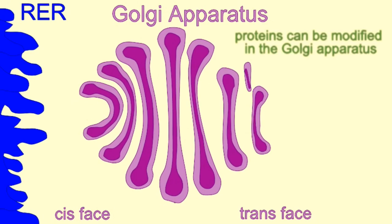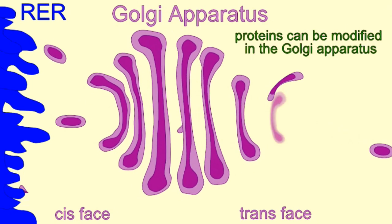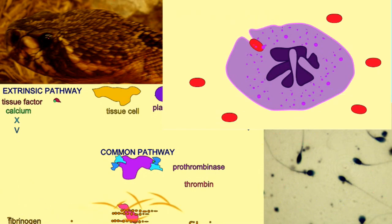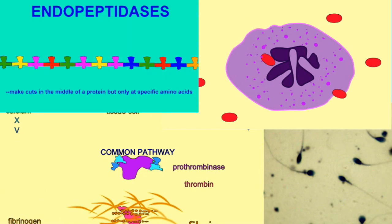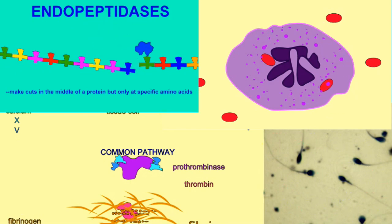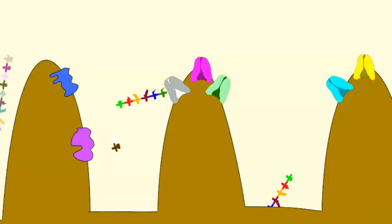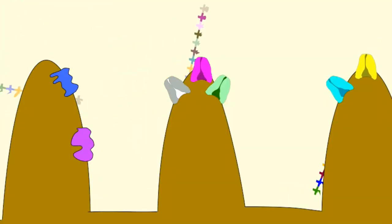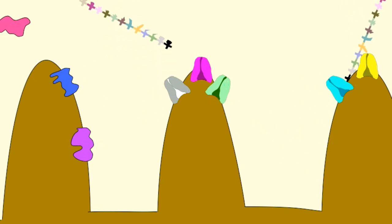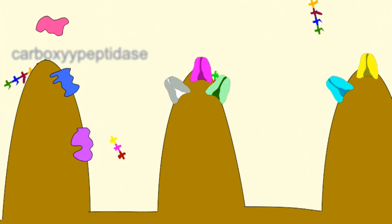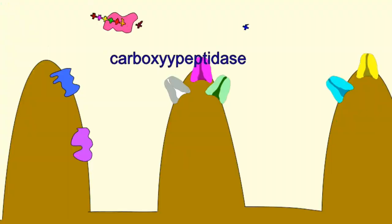For example, not only is trypsin a serine protease involved in digestion, but serine proteases are also involved in blood clotting, in fertilization, and in many other processes. So breaking up peptide chains can have diverse functions, which is significant given that ACE2 is widely distributed throughout the body.